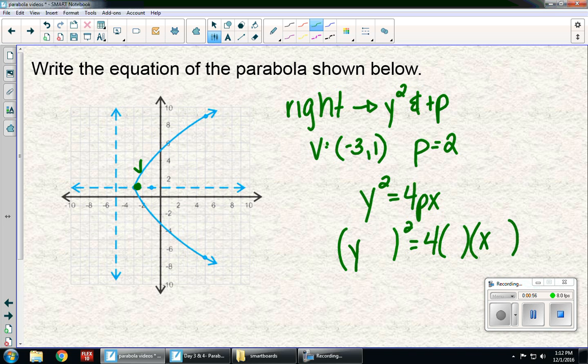So, just like in a circle, you're going to change the values. Because the y value up here is a 1, it's going to be a minus 1. And because the x value is a minus 3, it's going to be a plus 3. And then we said p was 2. So, my equation is y minus 1 squared equals 8 times x plus 3.